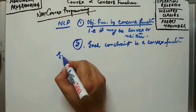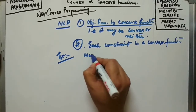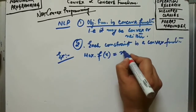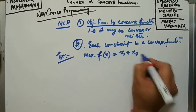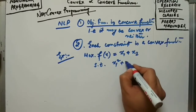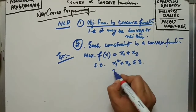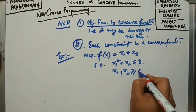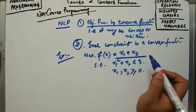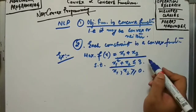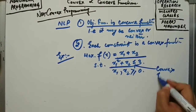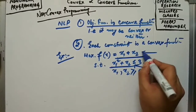For an example of non-convex programming: Maximize f(x) = x₁ · x₂, subject to x₁² + x₂ ≤ 3, and x₁, x₂ ≥ 0. Here the objective function is a type of concave function, and the constraints are convex functions.